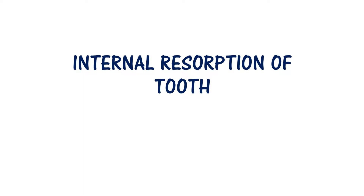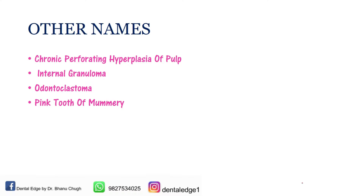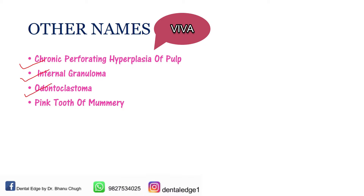Let's first see the other names for internal resorption of tooth, which you should know since they are asked in viva. The names are: chronic perforating hyperplasia of pulp, internal granuloma, odontoclastoma, and pink tooth of Mummery. These are extremely important. Sometimes you can be asked what is odontoclastoma, or in viva you can be asked what is pink tooth of Mummery. You should know that pink tooth of Mummery is internal resorption of tooth.